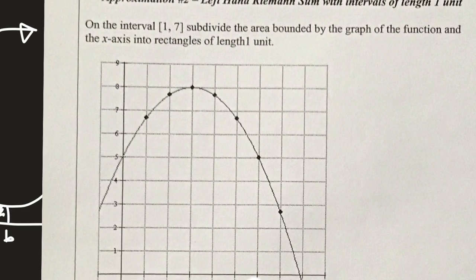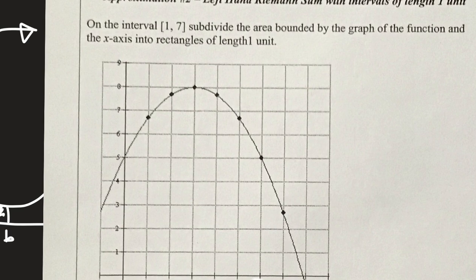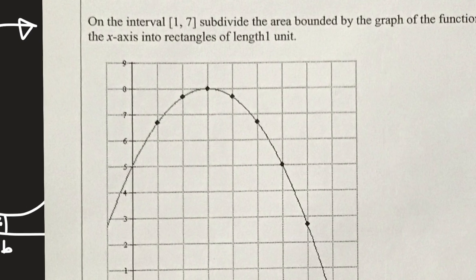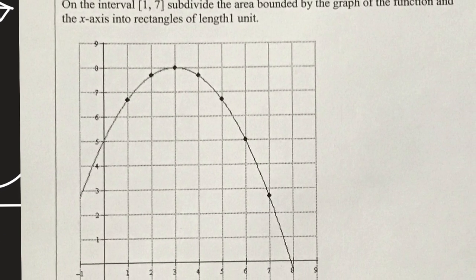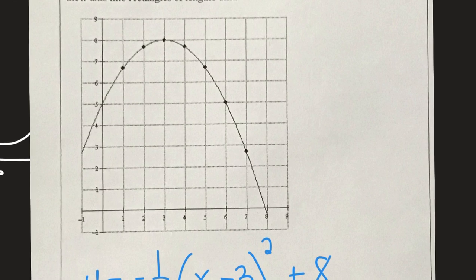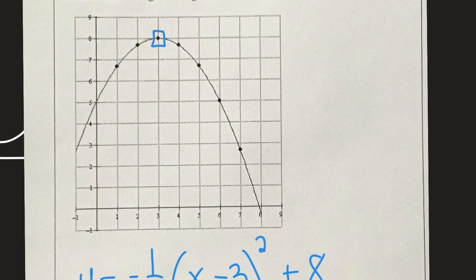We're going to use the left-hand Riemann sum, which means we're going to take the points from the left to the right and use the left endpoints — basically the y-values. This is the graph of a quadratic, and this is its equation. It has a vertex of positive 3 comma 8, so this is in vertex form, and it has a negative one-half coefficient.